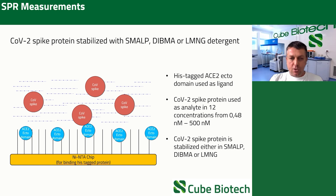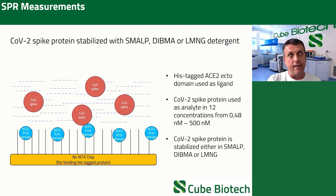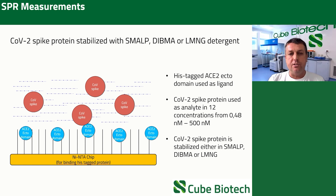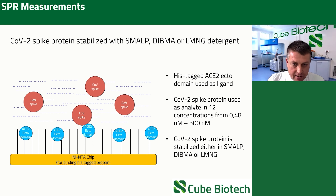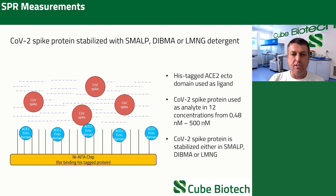We set up an experiment where we solubilized COVID spike protein — the wild type. We already have the mutants in-house: the English, South African, and Brazilian mutants. But here I want to show you data on the wild type. We solubilized the wild-type COVID spike with SMAPs, DIPMA, and LMNG. We fixed ACE2 on a nickel NTA chip, and then we looked at how the differently solubilized spike proteins bind and what the KD values are.